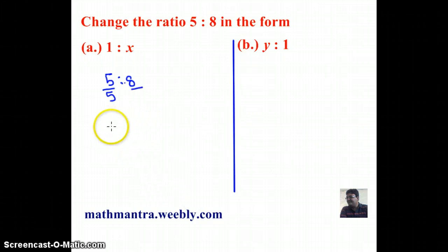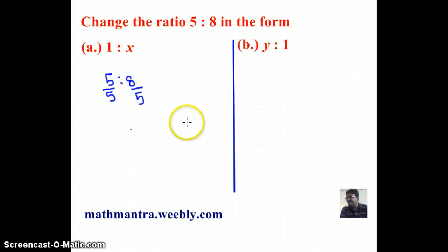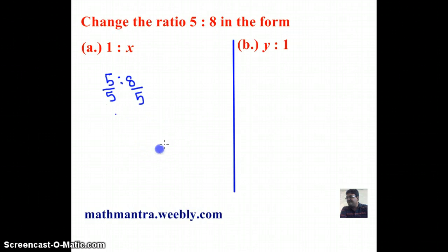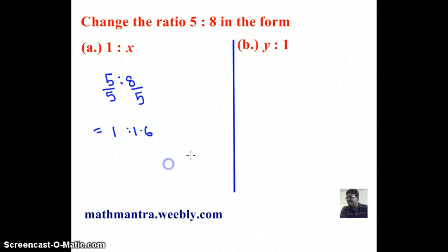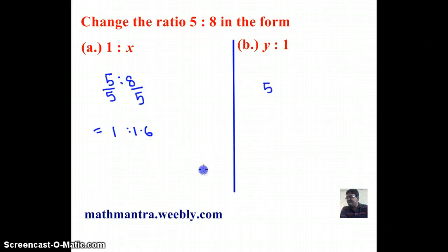When we add 2x, 3x, and 8x, what we get is 13x. So 13x equals 117. In order to get the value of x, we divide both sides by 13 — these cancel out and x equals 9.